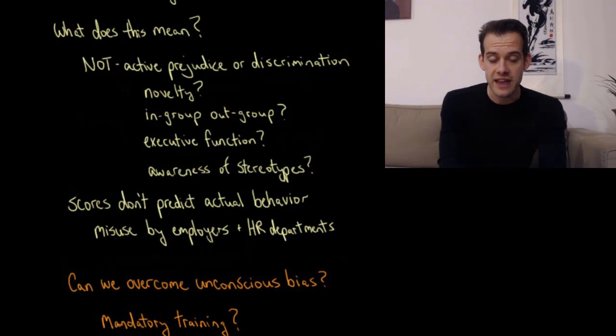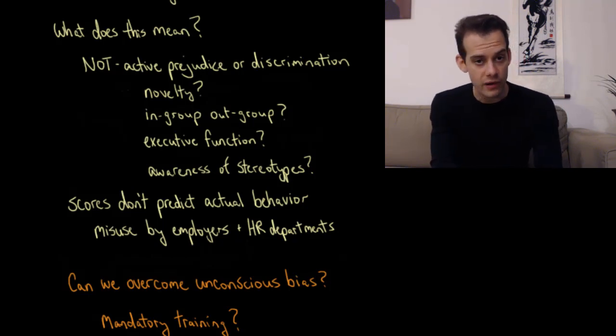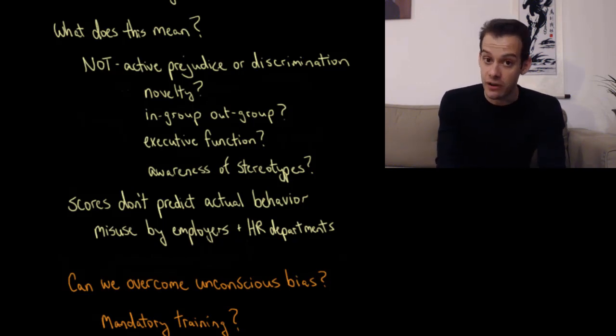We might also think about whether this has to do with control over our behavior, our ability to regulate our own behavior. And this then might relate to our executive function. And lastly, we might consider whether this is just awareness of stereotypes. We might know that there are certain stereotypes that exist in society, and that doesn't necessarily mean that we believe these stereotypes or that we would ever act on them, but perhaps they influence our response time.